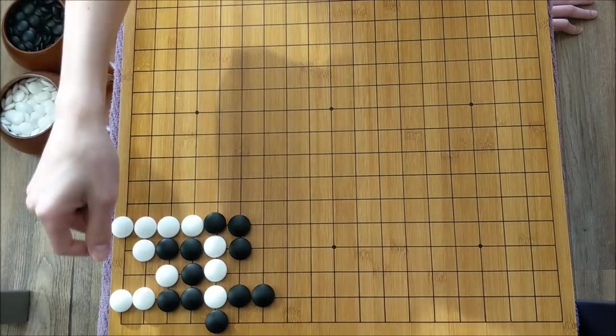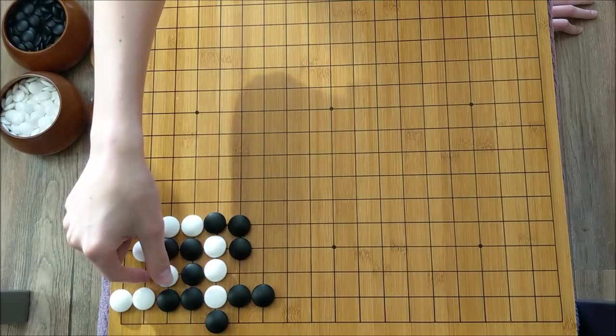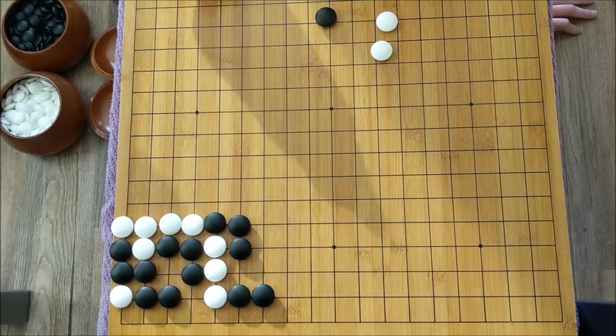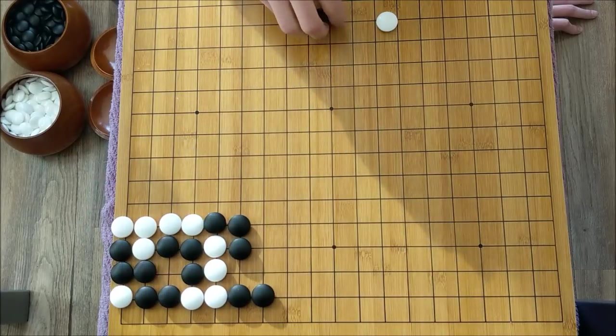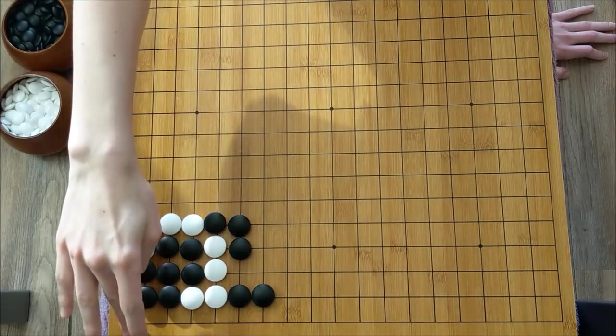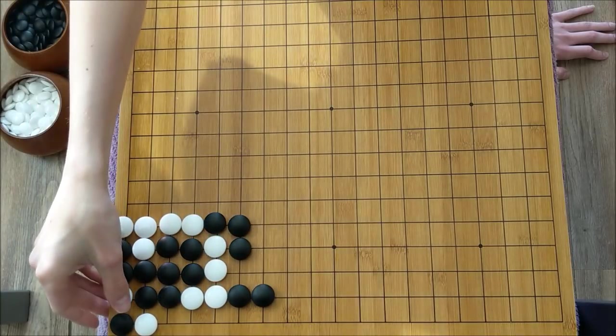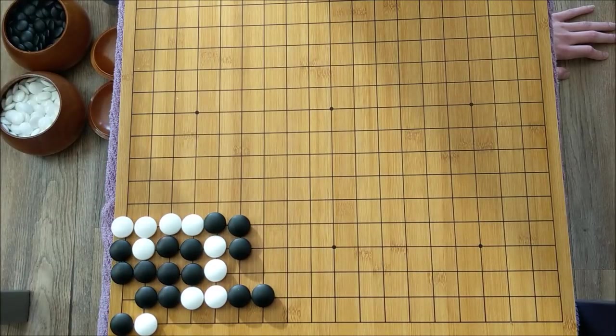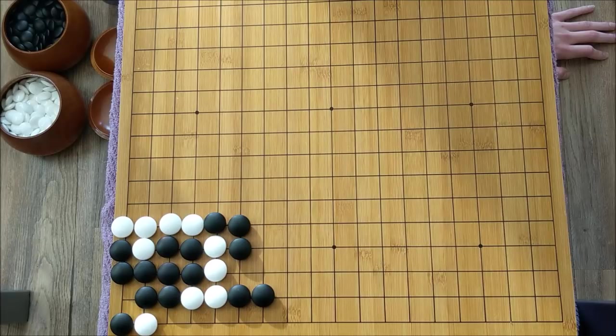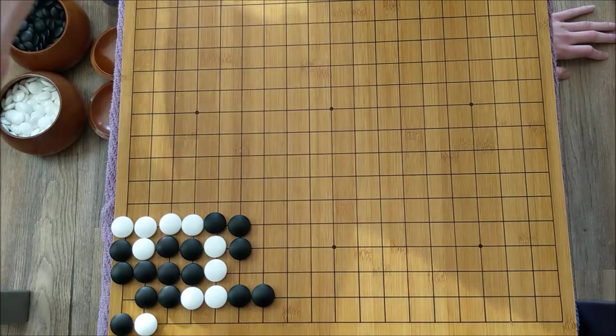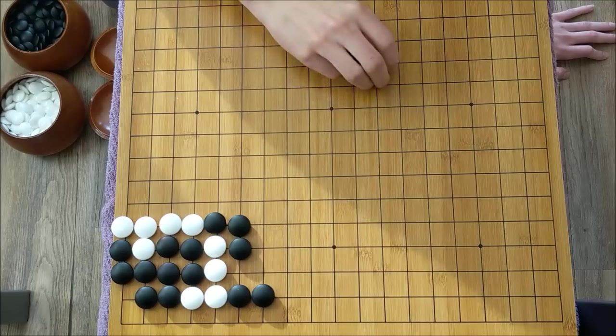This move also doesn't work, because once white plays here, which is an atari, and black fills in, white can play here. Black has to take, and now it's a ko for the entire corner. Black can do better than that. Black does not need to make a ko for this.